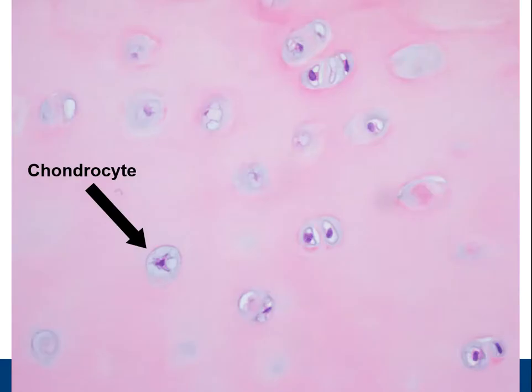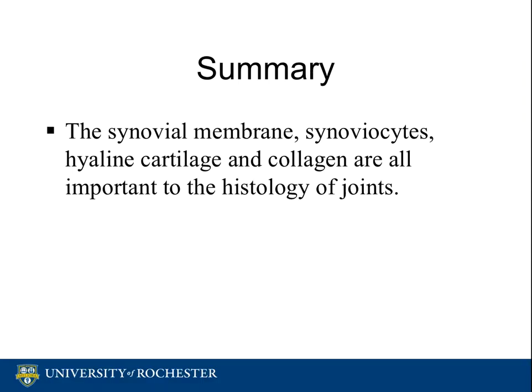This is a high power view showing chondrocytes in the articular cartilage. In summary, the synovial membrane, synoviocytes, and hyaline cartilage are all important to the histology of joints. That concludes our review on the normal histology of joints.